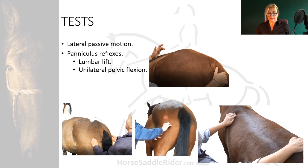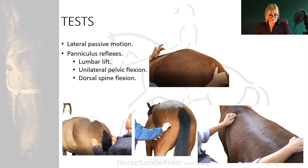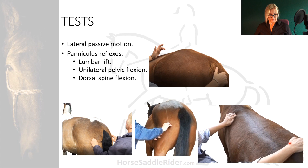In the mid back, scratch simultaneously where the points of the tree would lie and just above the opposite tuber coxae — scratching in this direction, towards the spine. Every time a scratch movement is made the horse will make an S-shaped curve — a very gentle S. Alternate by swapping hands, and compare sides.